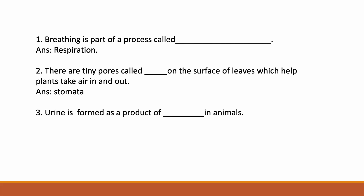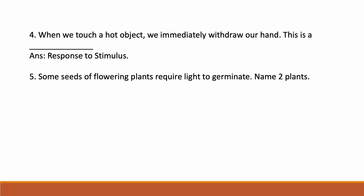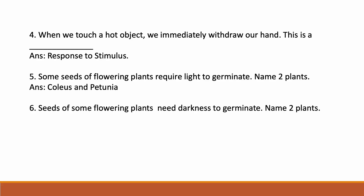Urine is formed as a product of excretion in animals. When we touch a hot object we immediately withdraw our hand — this is a response to stimulus. Some seeds of flowering plants require light to germinate. Name two plants that require light to germinate: Coleus and Petunia. Seeds of some flowering plants need darkness to germinate. Name two plants that need darkness to germinate: Calendula and Zinnia.